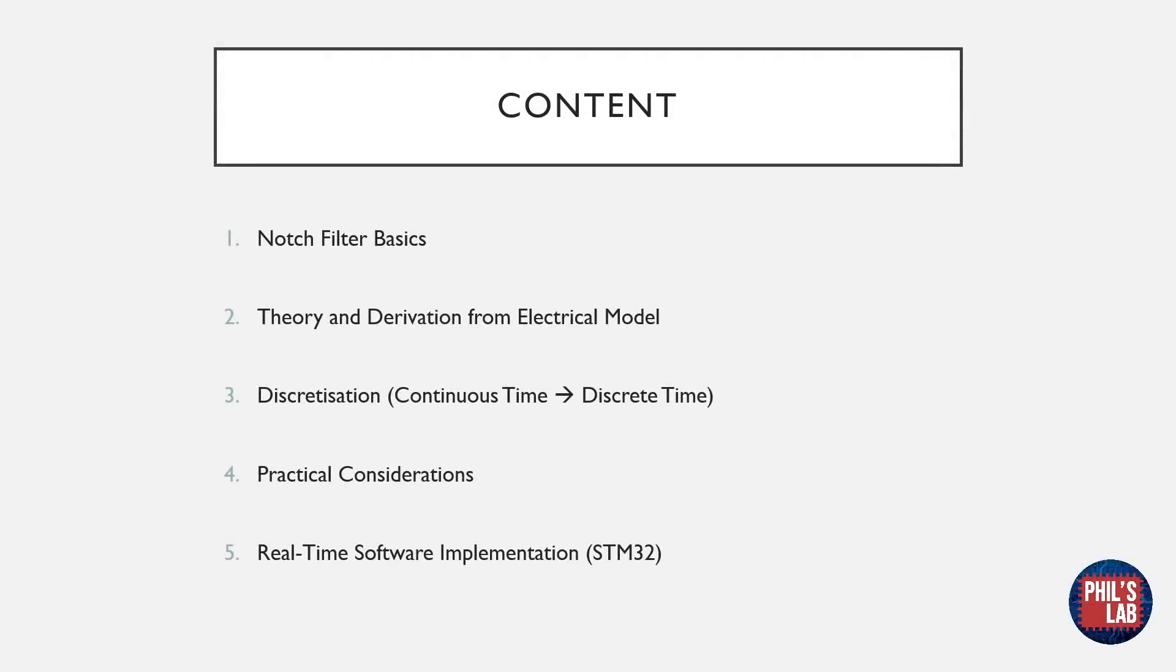To start with we'll cover the basics of notch filters, what they are and why they are useful. Then we'll look at an analogue electronic prototype in the form of an RLC filter and derive the governing mathematical model of our filter. Since we wish to implement the notch filter in a digital or discrete time system we'll need to discretize our model mathematically. Before implementation we'll look at some practical considerations and lastly we'll use C and an STM32 microcontroller to test out our notch filter using the LittleBrain board.